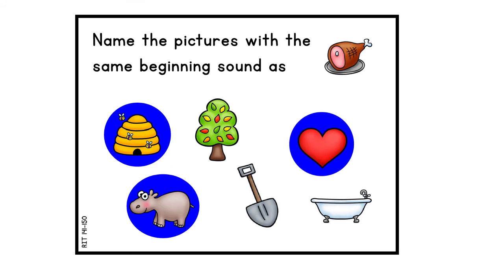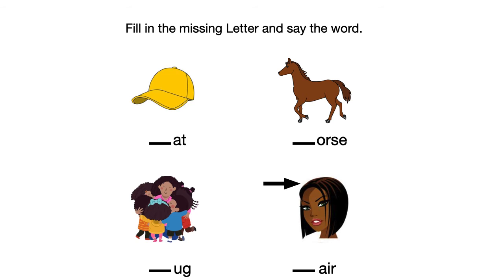With the next slide you're going to need your paper again. Fill in the missing letter and say the word. I will give you a minute to fill in the missing letter for each picture. So the first picture is H-E-T. The next picture is horse. The next picture is hug. And the last picture is hair. We just did H words in the slide before, and now we're continuing with more H words.